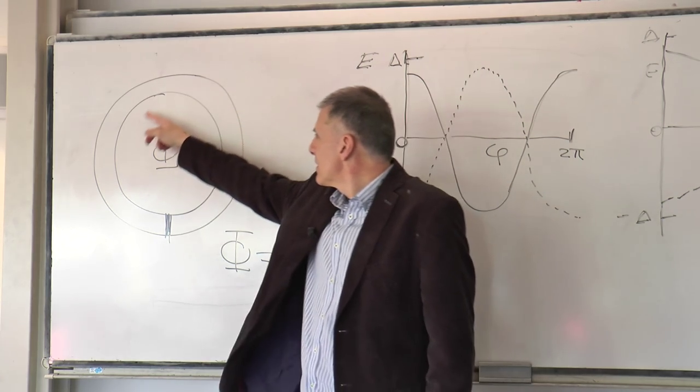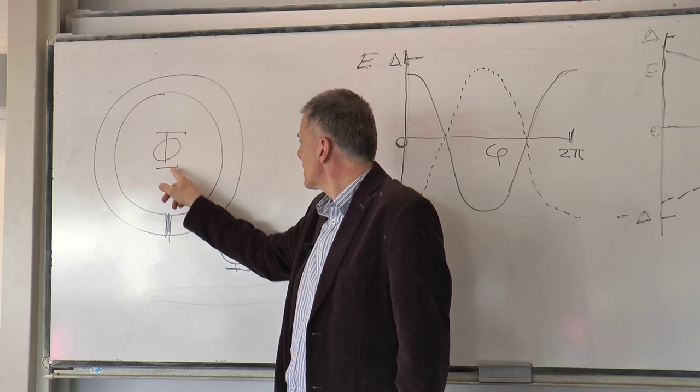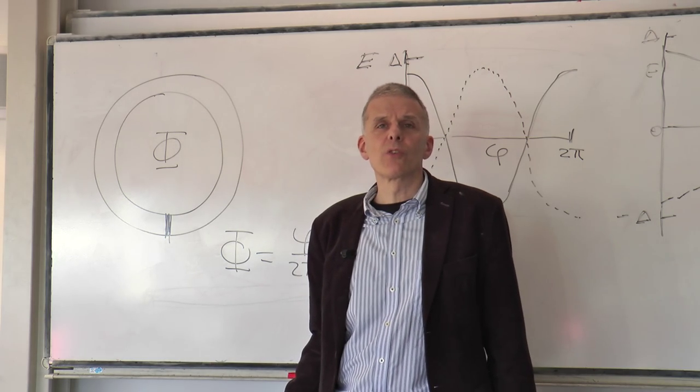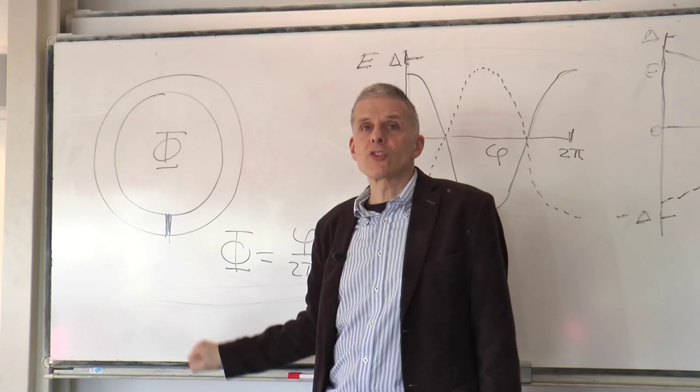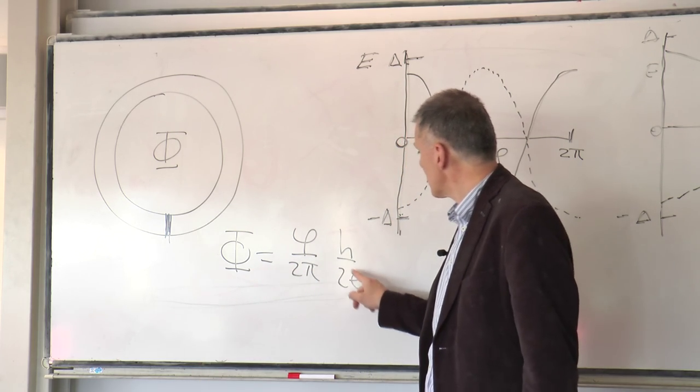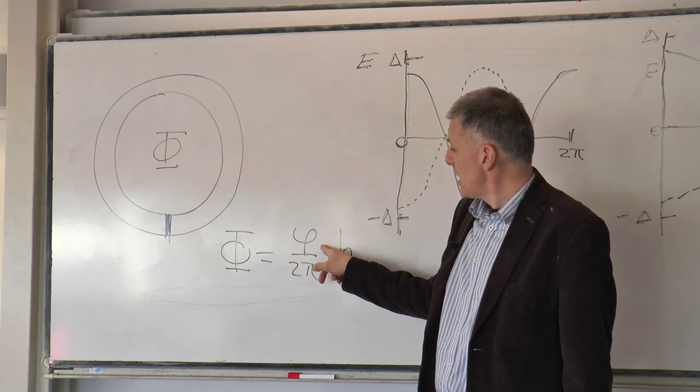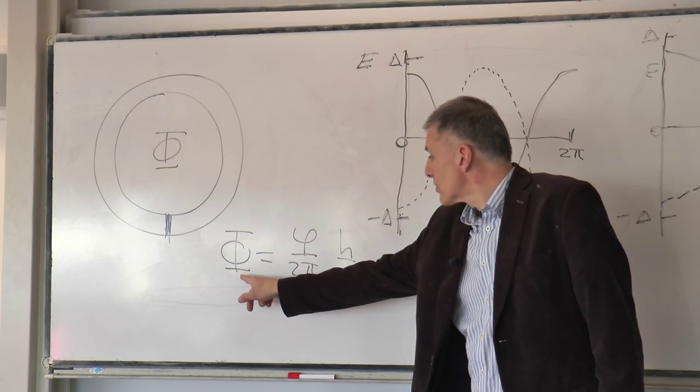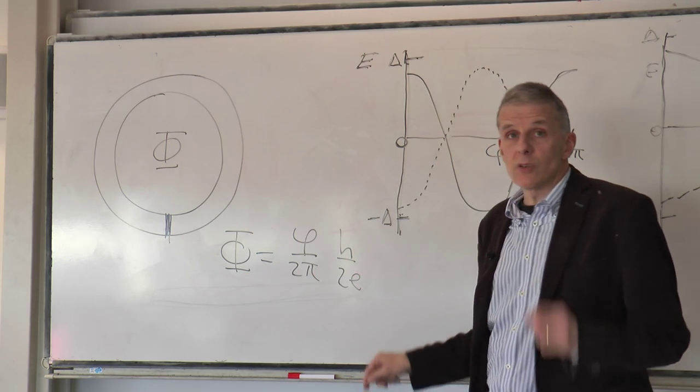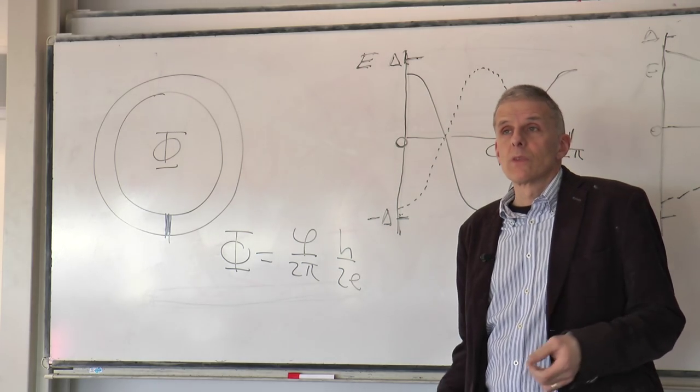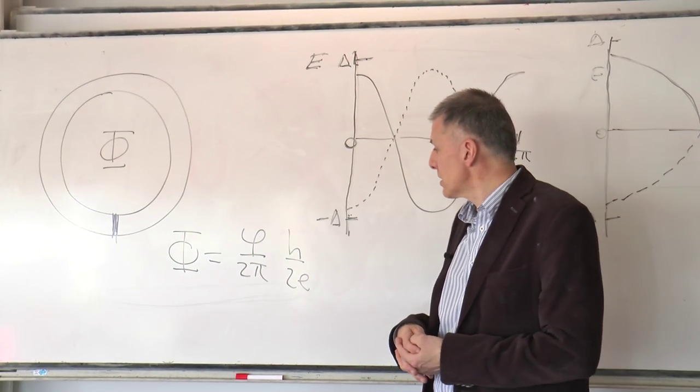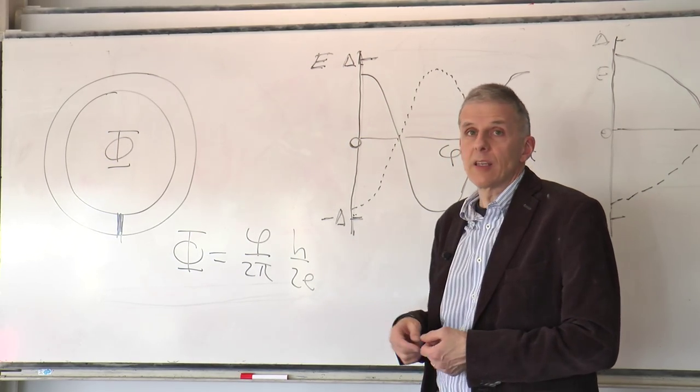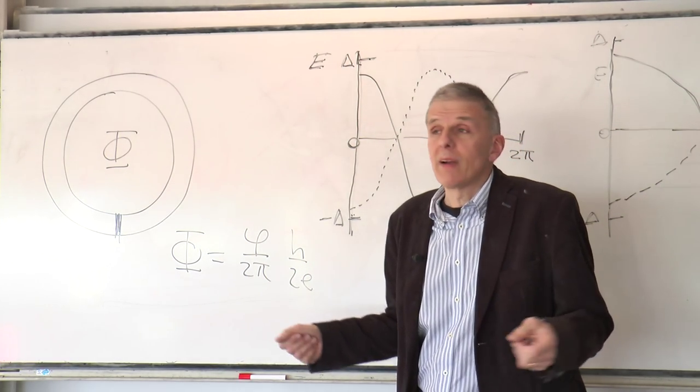And typically when we have these things, a Josephson junction, instead of working with the flux through the ring, we like to speak about the phase difference across the junction, but they are just directly related, so that a phase increment of two pi corresponds to a flux increment of h over two e.